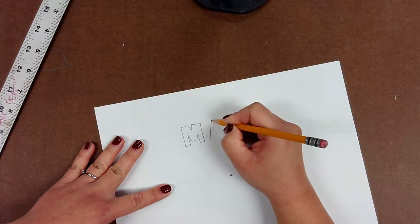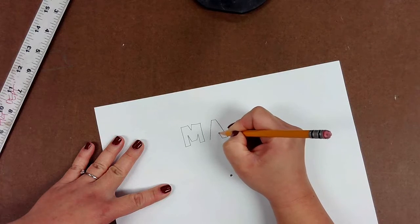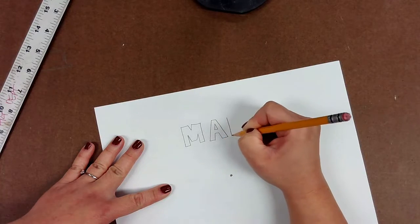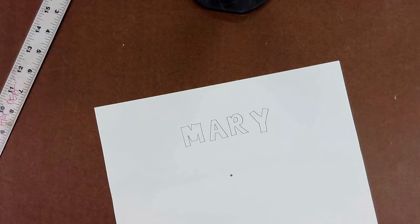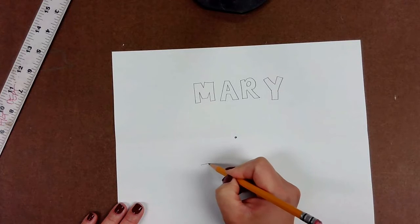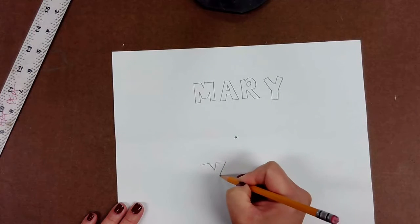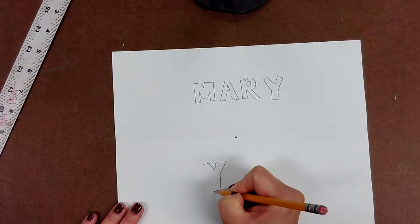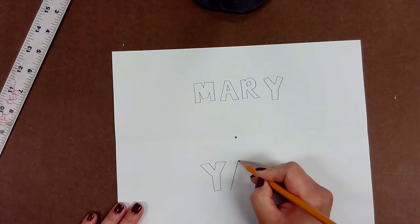And now we're going to move down to the second half underneath our horizon folded line and write out our last name. So again, you're going to do this in block lettering and just go ahead and write out the letters.